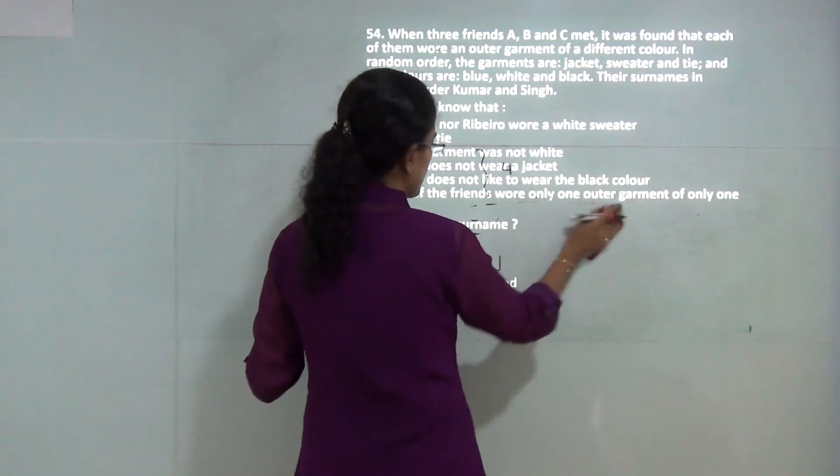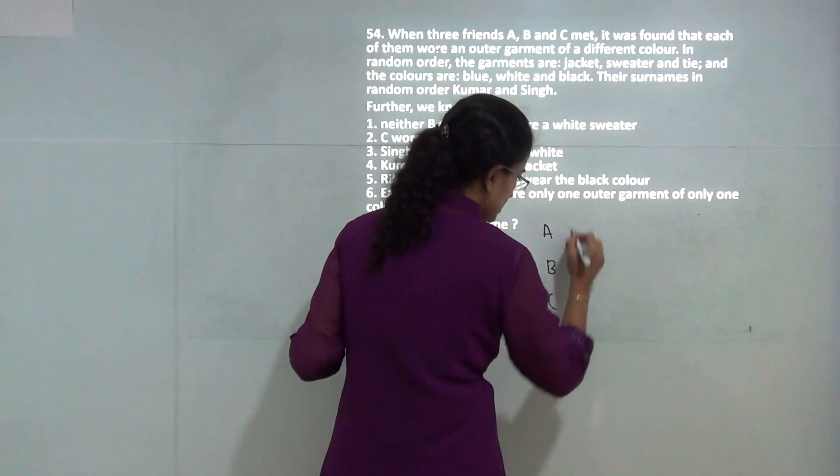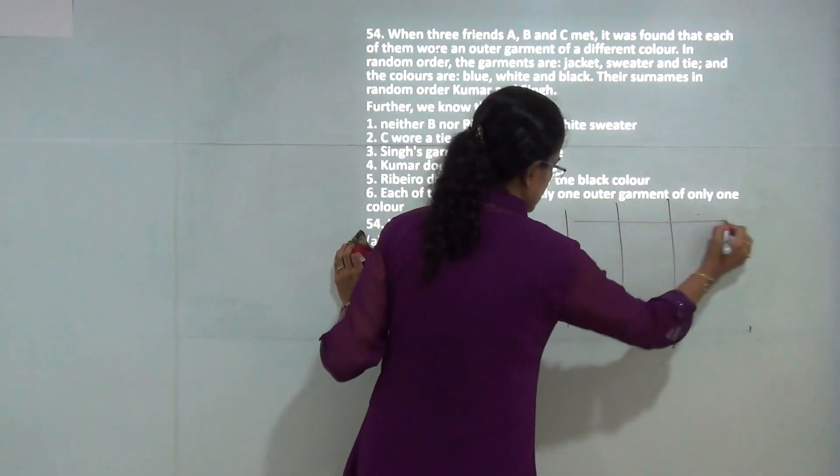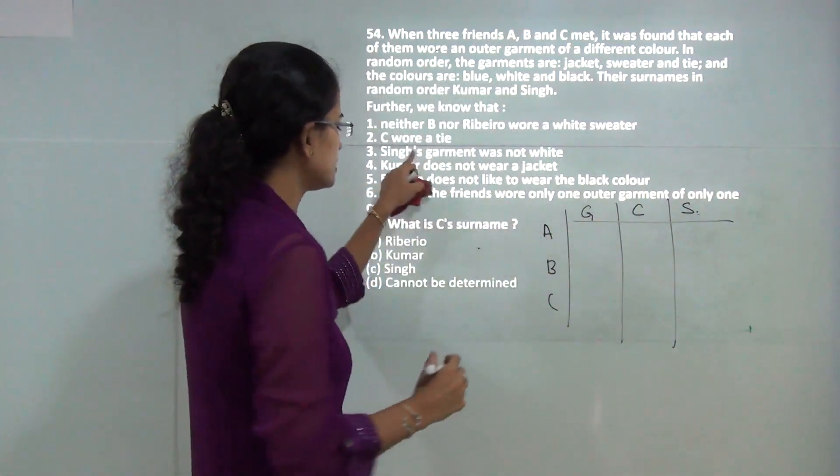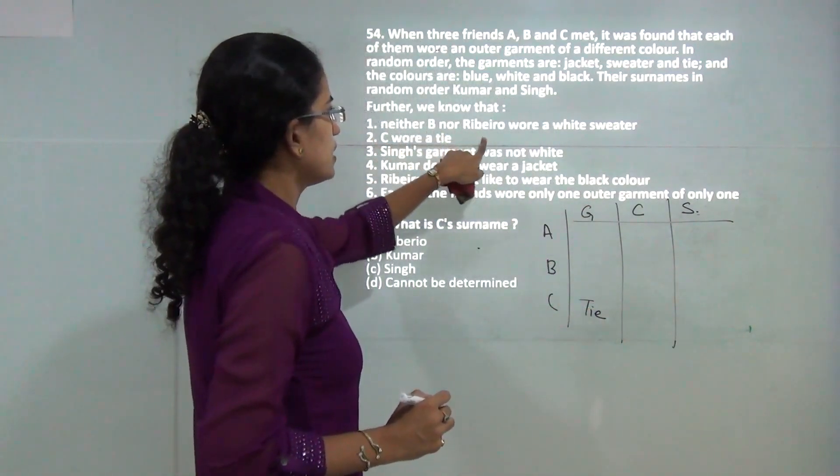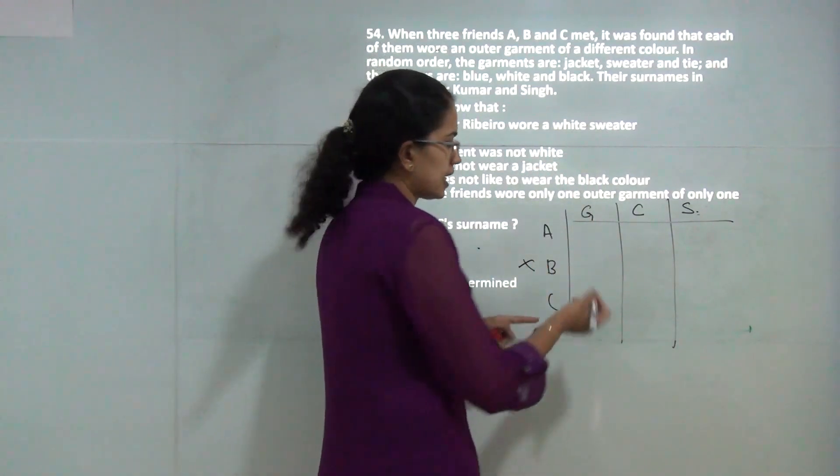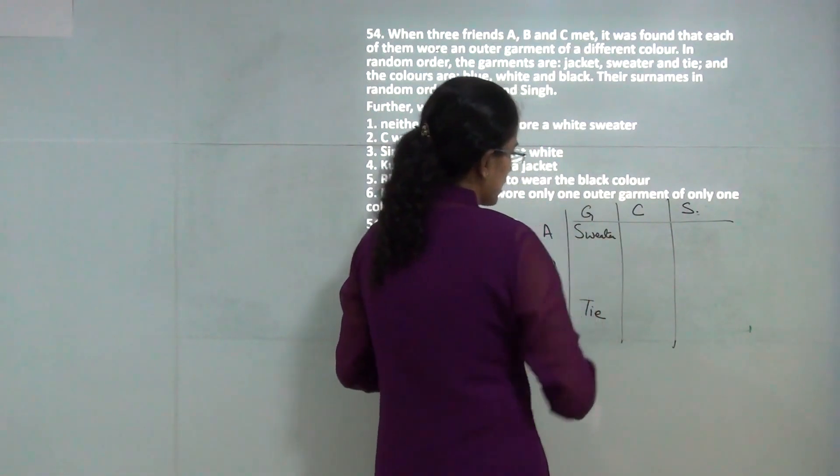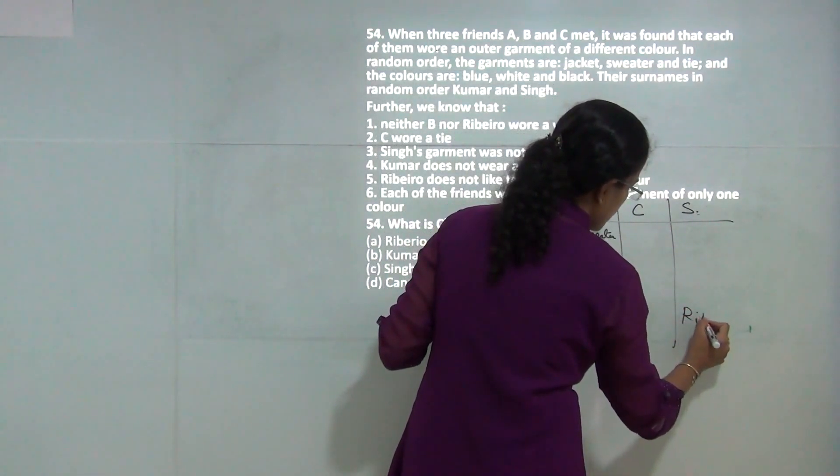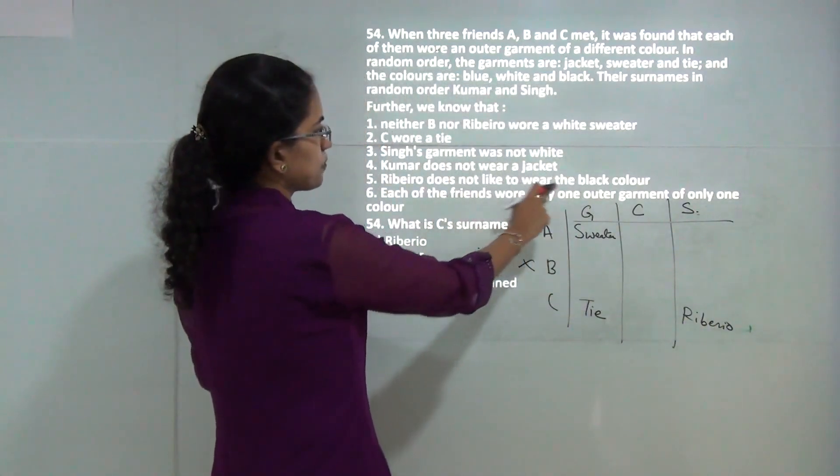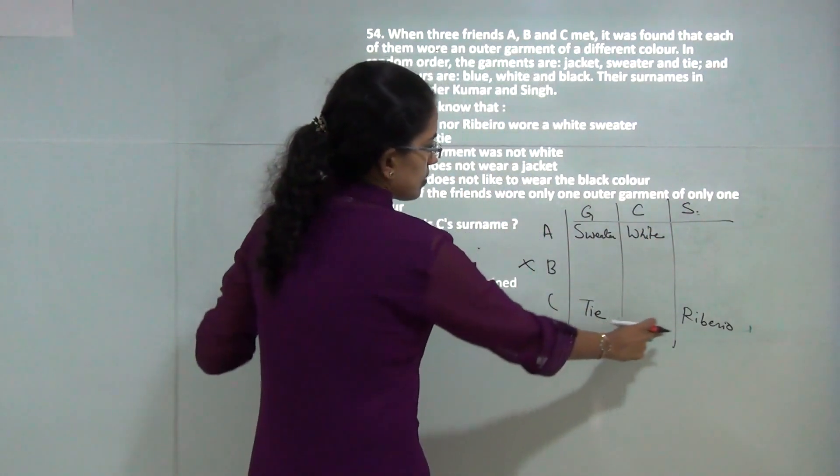This is a typical analytical reasoning question where students got confused. We need to define A, B, and C. The best way to solve is to tabulate garments, color, and surname. C wears style A. B and Riberiu did not wear the white sweater, so B did not wear sweater. The only option for sweater is A, and this would be Riberiu.